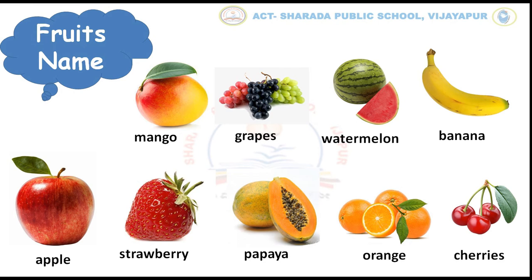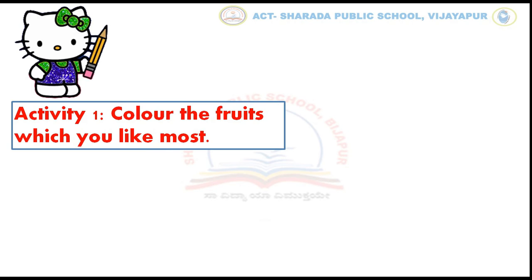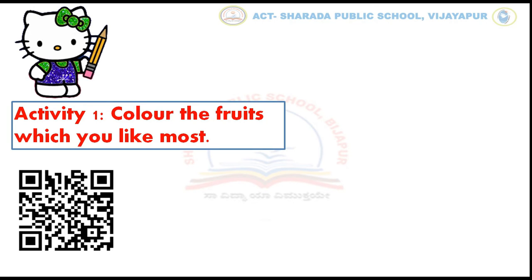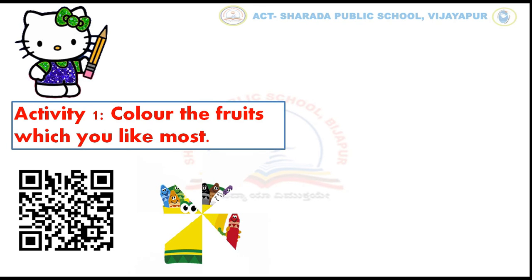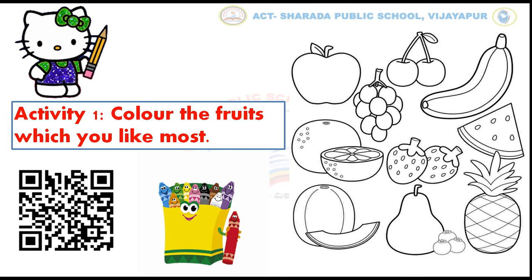Very good children! Let us do our first activity: color the fruits which you like the most. Dear parents, please show the video to your child by scanning the QR code to understand the concept of fruits, and please provide crayons to your child to complete this activity. Children, identify and color the fruits you like the most. For example, I like an apple, so I am going to color an apple like this. In the same way, we have to complete this activity.